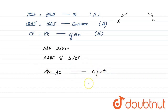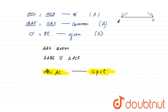Since both triangles are congruent, we can say that AB equals AC by CPCT — Corresponding Parts of Congruent Triangles. This proves AB equals AC, and therefore the triangle is isosceles, since an isosceles triangle has two equal sides.